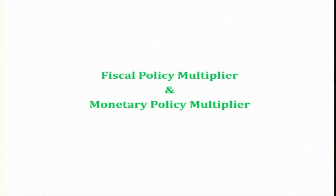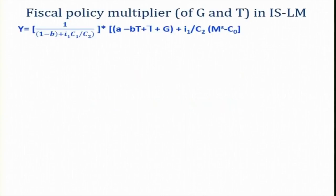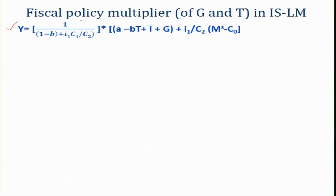Now let us proceed with deriving the fiscal policy multiplier and monetary policy multiplier. From the IS-LM model, when equating the equilibrium income and equilibrium rate of interest, we derived this combined equation from the IS equation and from the LM equation. Finally, we get Y equal to a multiplier component on the left-hand side and an autonomous component, where the additional term arises due to the money market being in the picture.